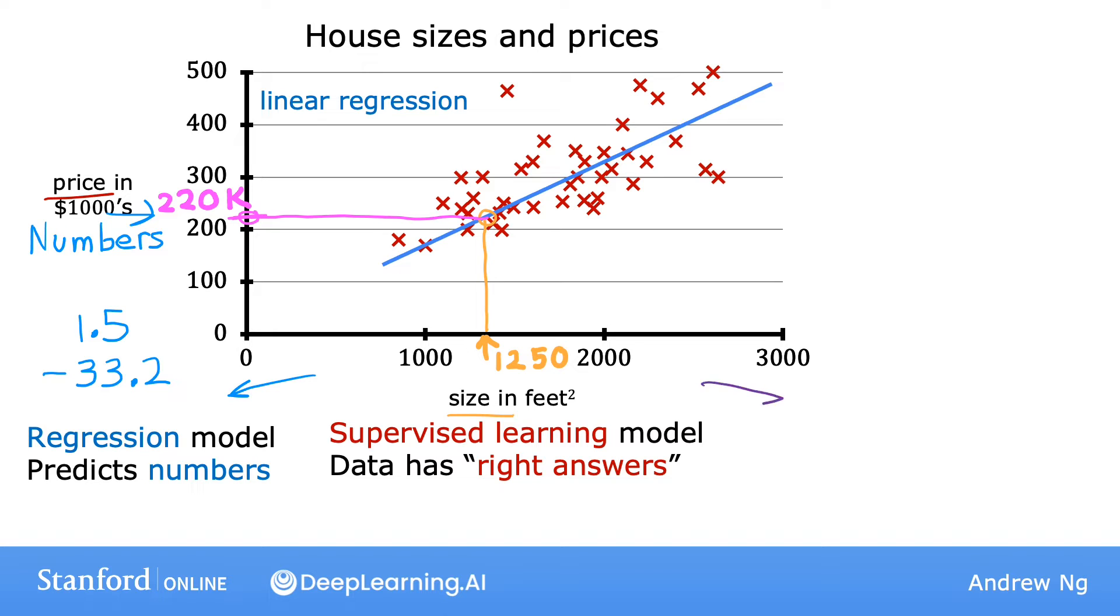And just to remind you, in contrast with the regression model, the other most common type of supervised learning model is called a classification model. A classification model predicts categories or discrete categories, such as predicting if a picture is of a cat, meow, or a dog, woof. Or if given the medical record, it has to predict if a patient has a particular disease. You'll see more about classification models later in this course as well.